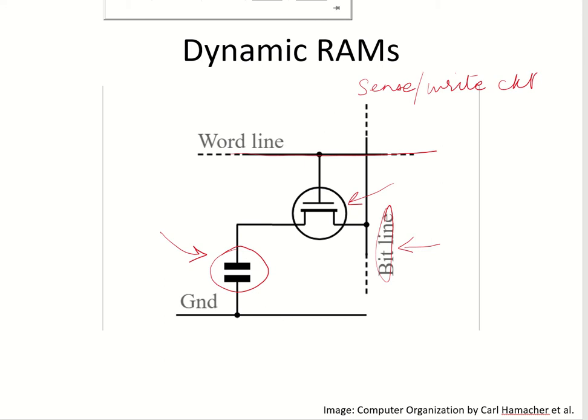If it is above some threshold, that refers to bit one. If it is below a certain threshold, then it represents zero. So if the sense circuit detects that the capacitor charge is above a certain threshold, this circuit will charge that capacitor to its full value.